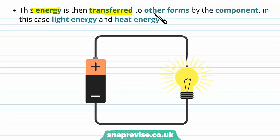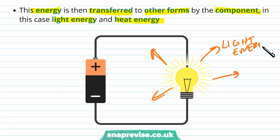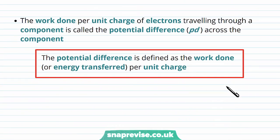This energy is then transferred to other forms by the component — in this case light energy and heat energy, depending on the purpose of the component. A lamp converts the energy it receives from the electron into light energy, but since components are rarely 100% efficient it also produces some thermal energy. The work done per unit charge of electrons travelling through a component is called the potential difference, PD, across the component.